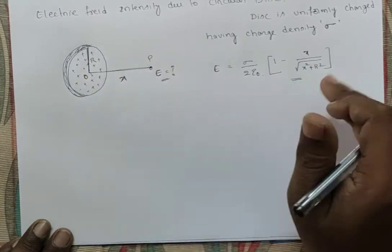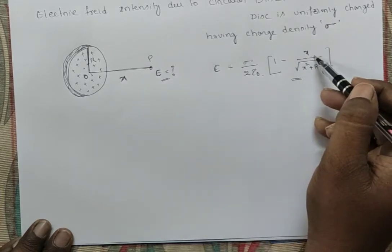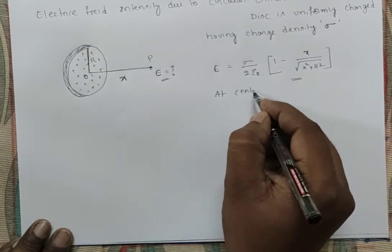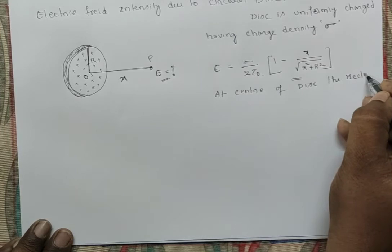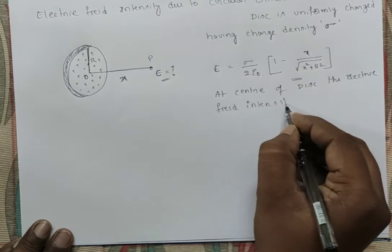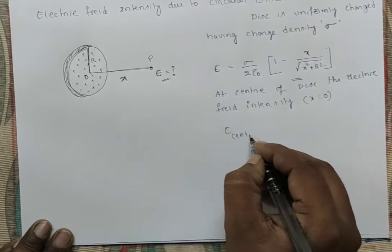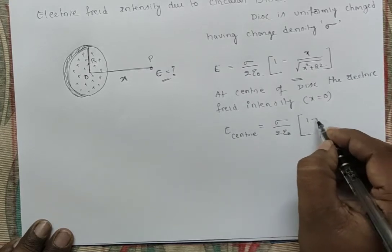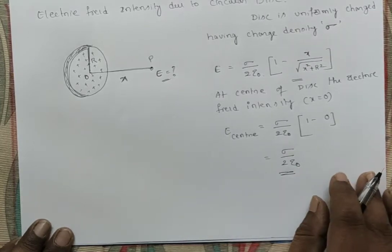At the center of the disc (X = 0), substituting into the expression: E = (σ/2ε₀) · (1 − 0) = σ/2ε₀. So the electric field intensity at the center of the disc is σ/2ε₀.